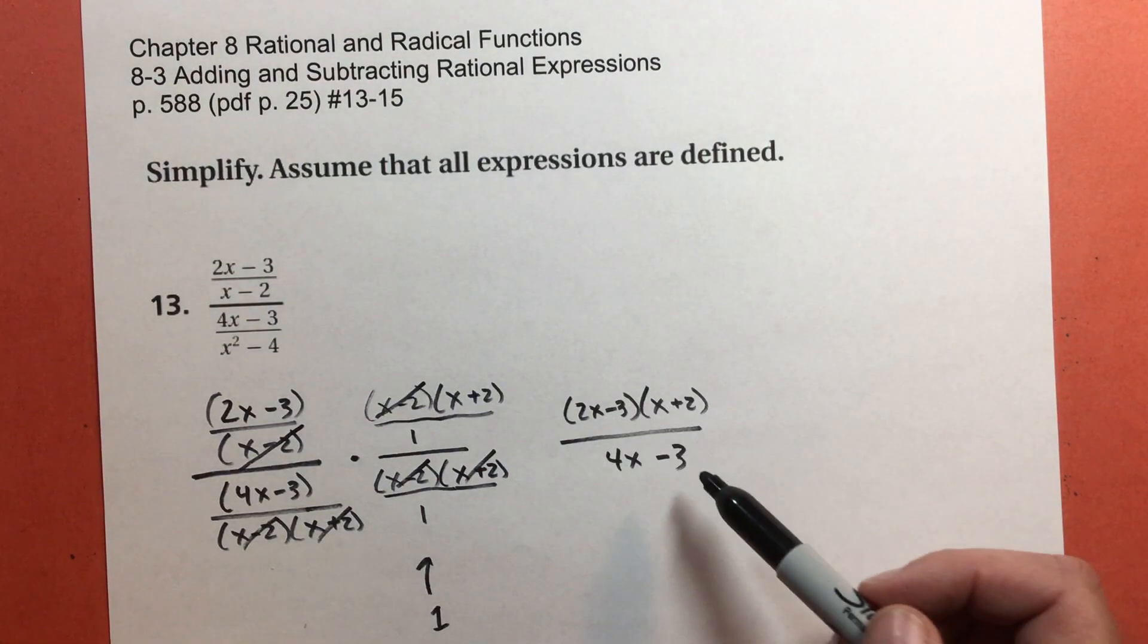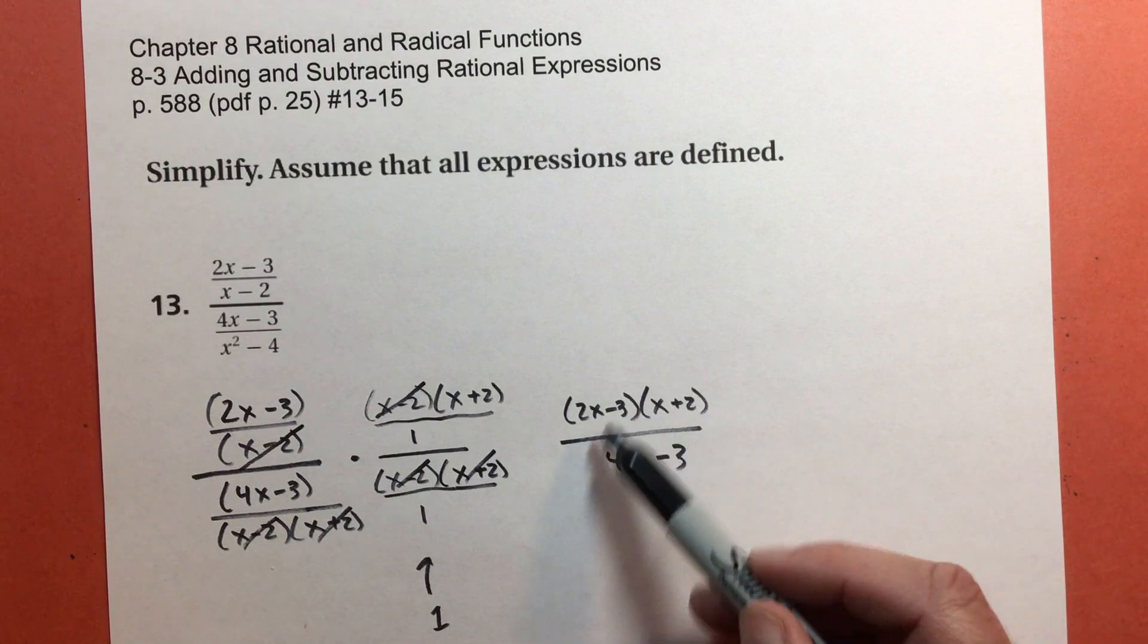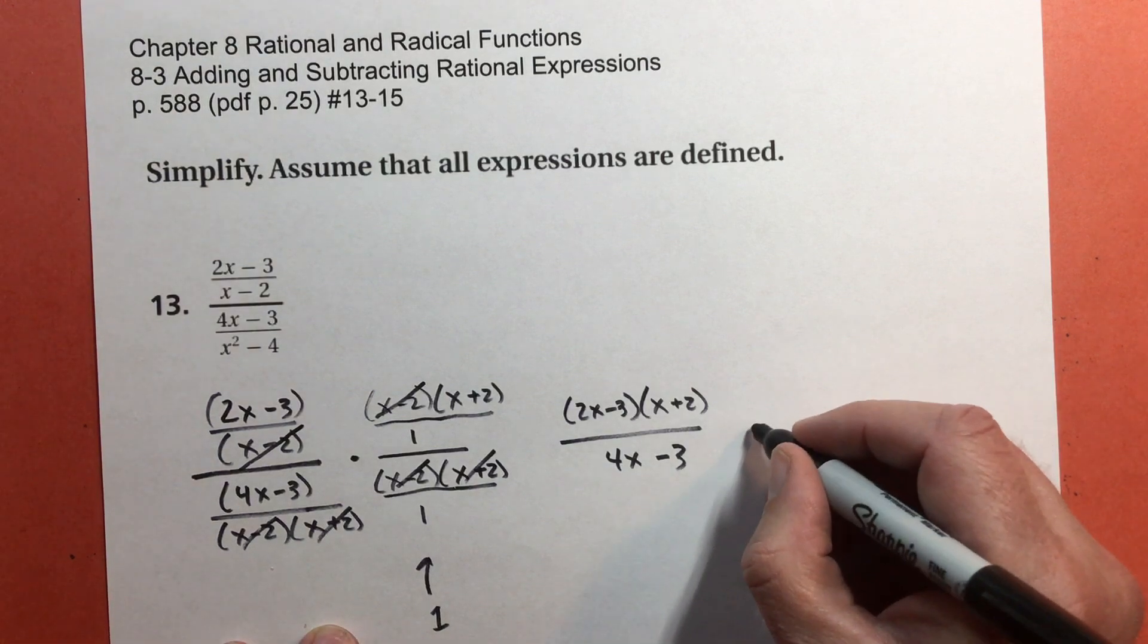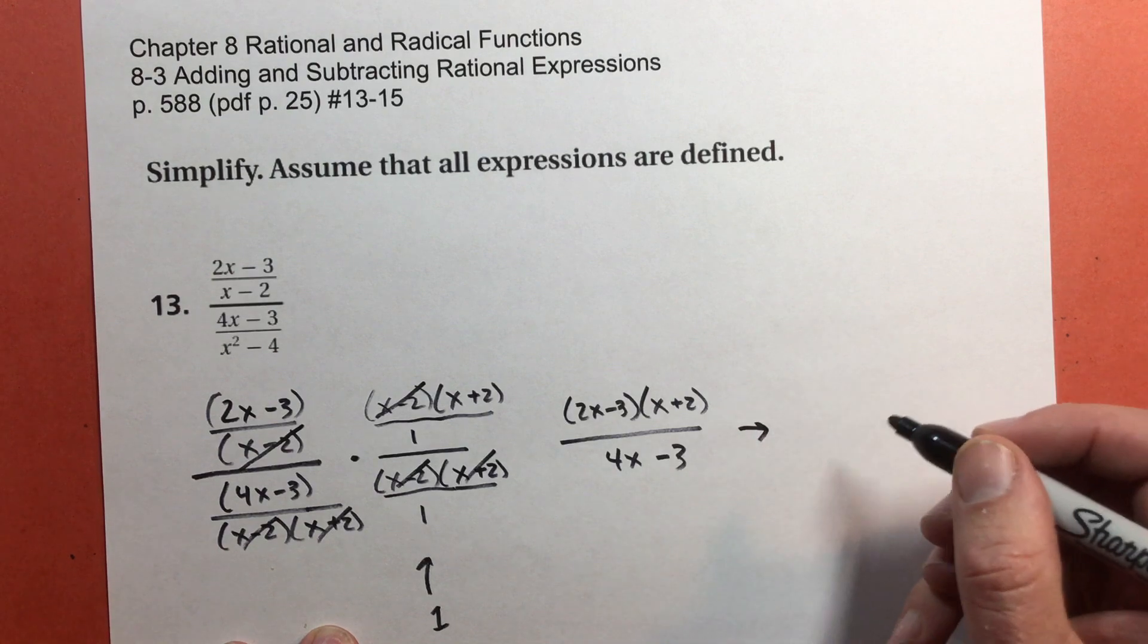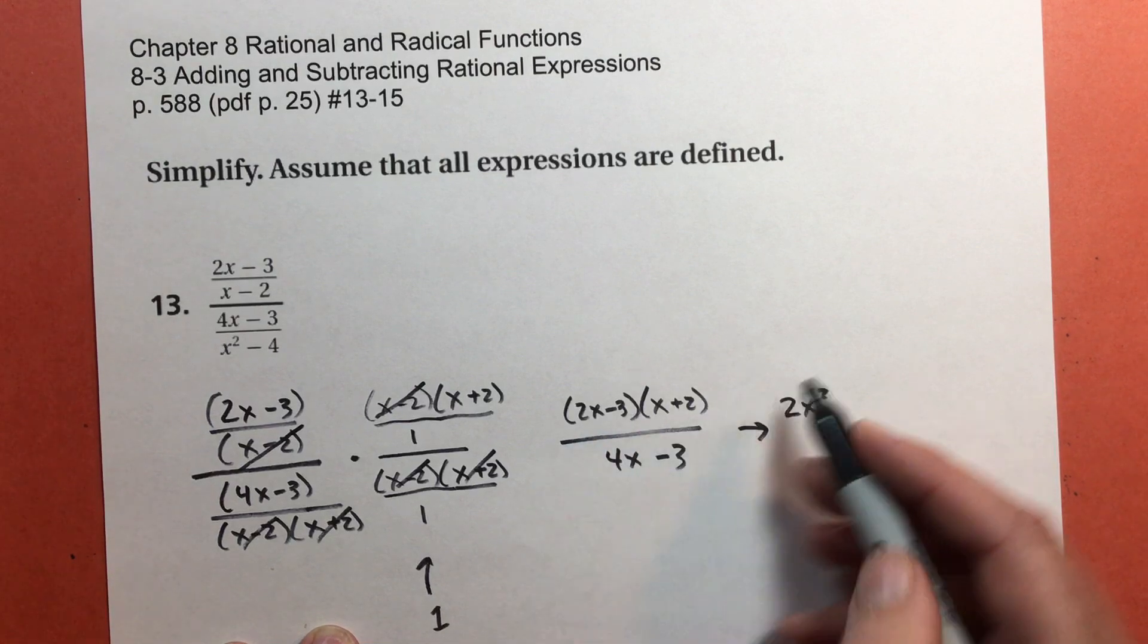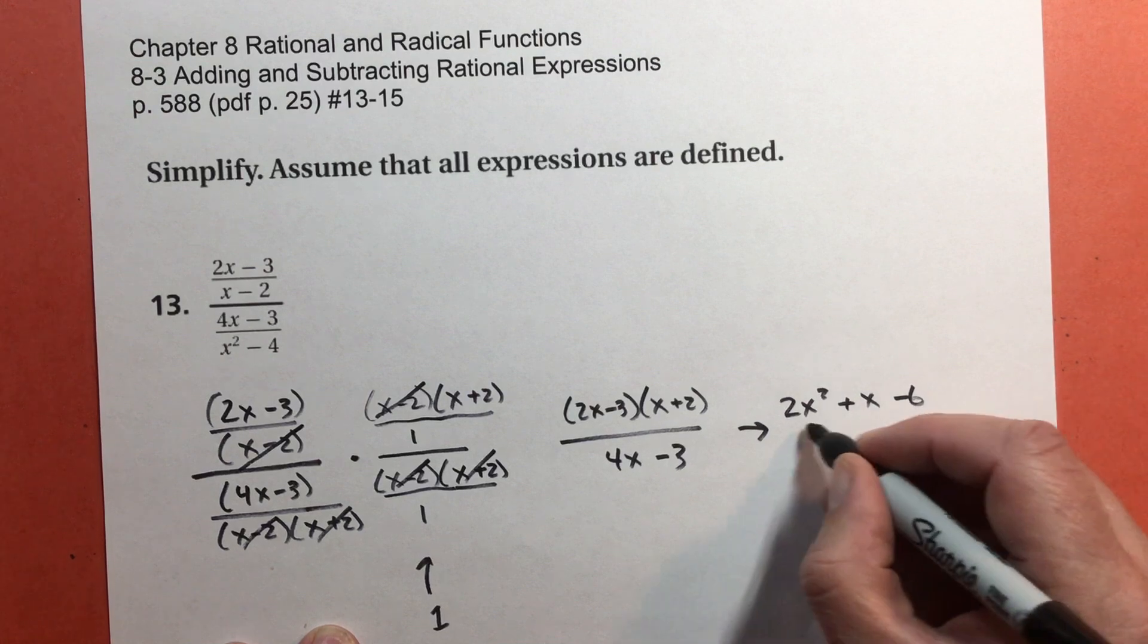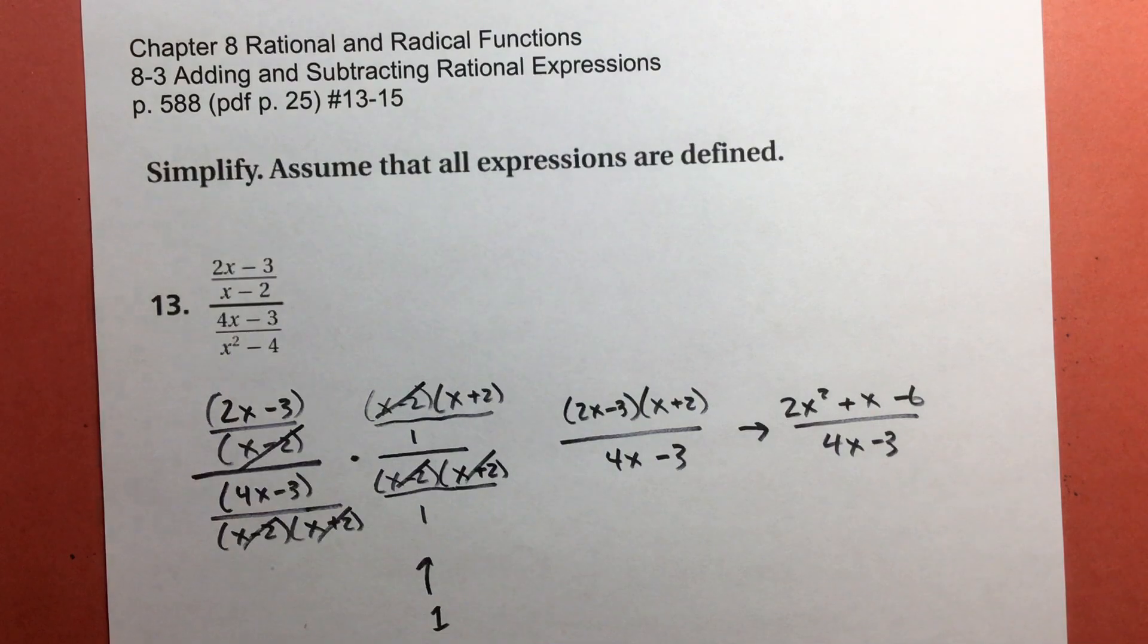Nothing is going to reduce any further. 2x minus 3, x plus 2, neither one of those are going to factor, so nothing is going to cancel further. To simplify it, I'm going to get 2x times x, which is 2x squared, 4x subtract 3x is 1x, and negative 3 times 2 is negative 6, all over 4x subtract 3.